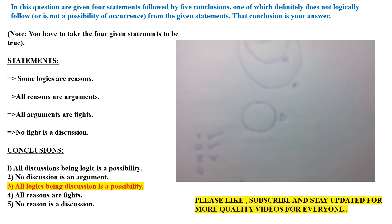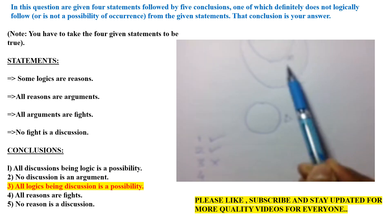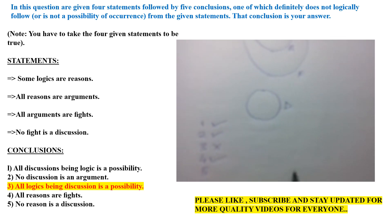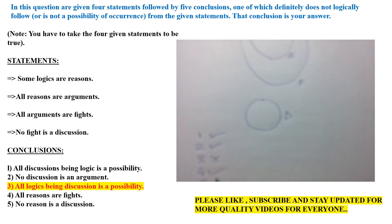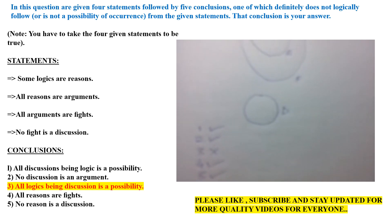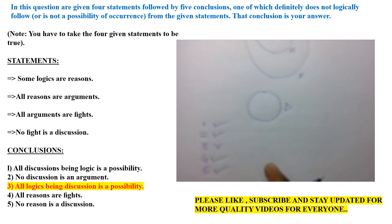The 4th conclusion is: all reasons are fight — basically it is correct. The 5th conclusion is: no reason is a discussion — this is also logically correct. Hence, the answer for this question is the 3rd one: all logic being discussion is a possibility.